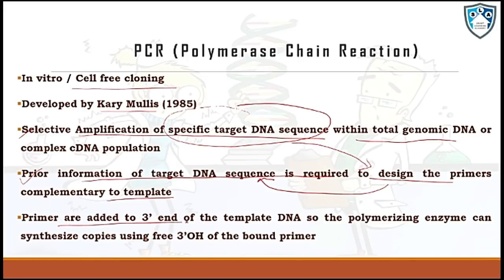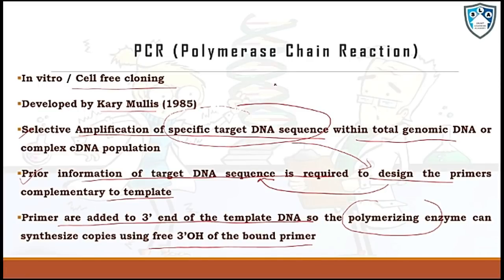The primers are added to the 3' end of the DNA template, so the polymerizing enzymes can synthesize copies using the 3' end of the bound primer. This means if a template is running from 5' to 3' direction, the primer would be added to its 3' end, and the 3' hydroxyl group of the bound primer would be free, so the polymerizing enzyme and other essential components of the PCR can carry out the further amplification process.